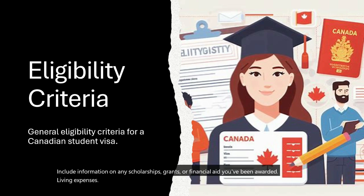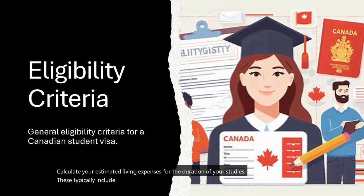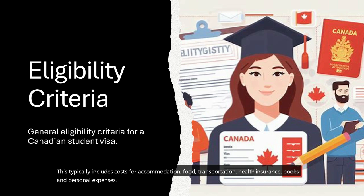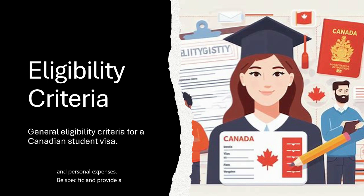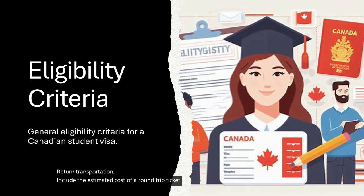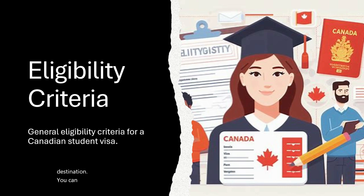Second, Living Expenses: calculate your estimated living expenses for the duration of your studies. This typically includes costs for accommodation, food, transportation, health insurance, books, and personal expenses — be specific and provide a detailed breakdown. Third, Return Transportation: include the estimated cost of a round-trip ticket to and from your home country or the study destination. You can get quotes from airlines or travel agencies to provide a more accurate figure.